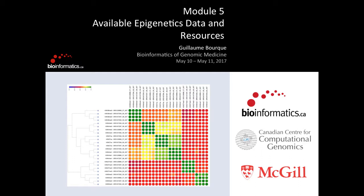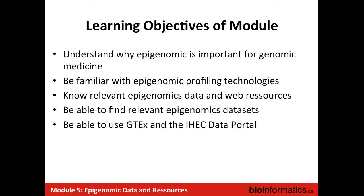So all of that was really focused on genetic variants — how do you call variants, how do you interpret variants. Today it's going to be completely different, where we're going to focus on other types of omics data sets: epigenetics and expression data, and how that can also be used in the context of exploring disease. The learning objectives of my module are as follows: we're going to try to understand why epigenetics and epigenomics is important in the context of genomic medicine.